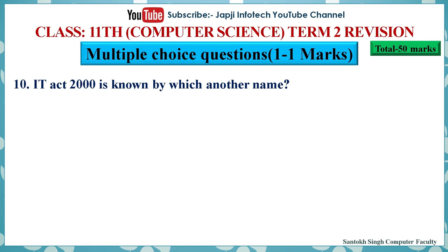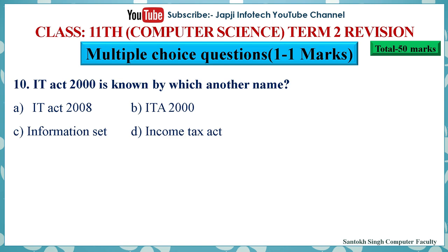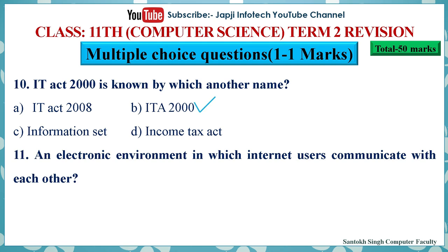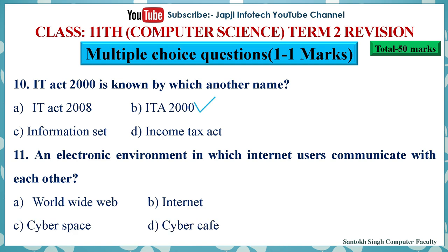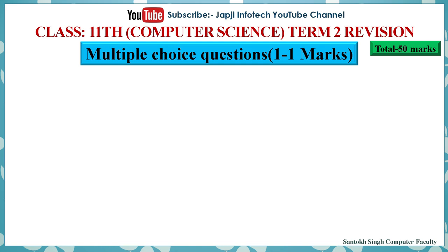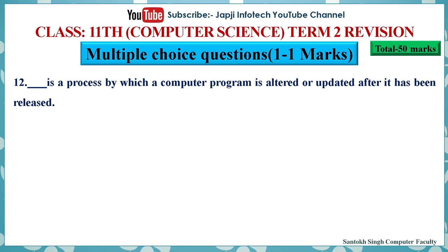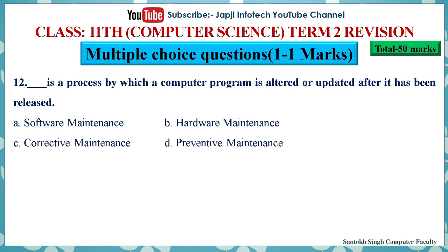Question 11: An electronic environment in which internet users communicate with each other — options are worldwide web, internet, cyberspace, or cybercafe. The right answer is cyberspace. Question 12: A process by which a computer program is altered or updated after it has been released — options are software maintenance, hardware maintenance, productive maintenance, or preventive maintenance. The right answer is software maintenance. Question 13: In computing, the process of starting a computer is called — options are safe mode, booting, starting, or login. The right answer is booting.